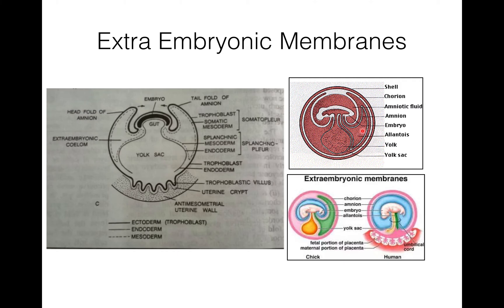Allantois is reduced in human beings. Now chorion — it is the outermost fold of somatopleure; somatopleure means ectoderm and somatic mesoderm. It surrounds the embryo. In reptiles, birds, and prototheria, allantochorion — the combination of chorion and allantois — acts as an extra embryonic lung because it helps in exchange of gases. But in primates including human beings, only the chorion forms the placenta, that is a chorionic placenta. In other eutherians, allantochorion forms an allantoic placenta.